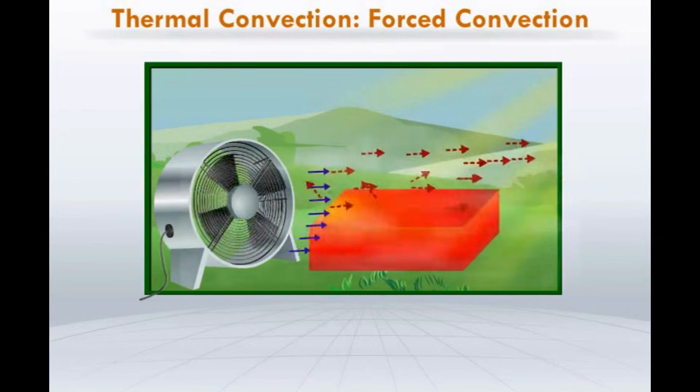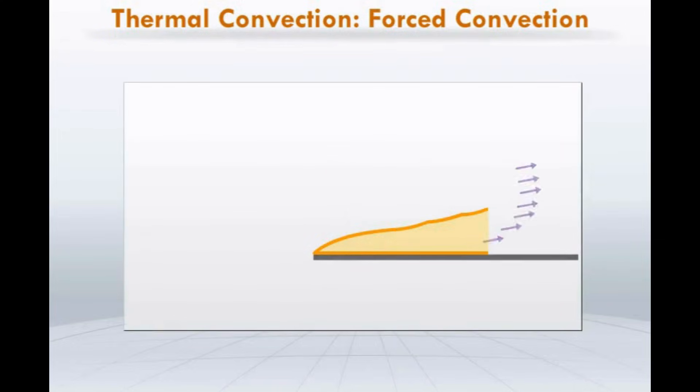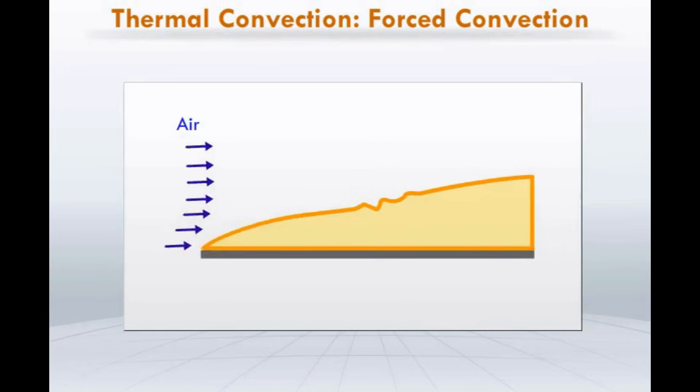We see that when a fluid, say air, flows over this, a parabolic layer is formed over its surface along the flow. This is due to the viscosity of air.